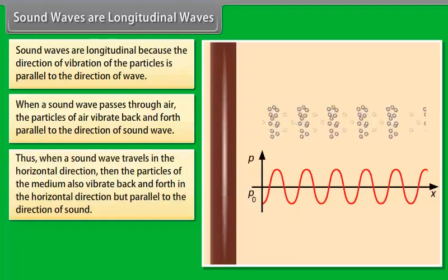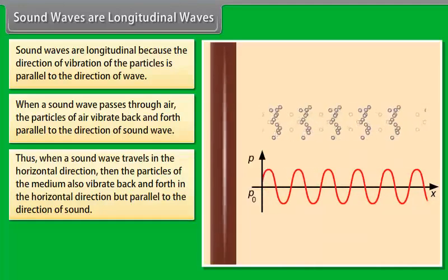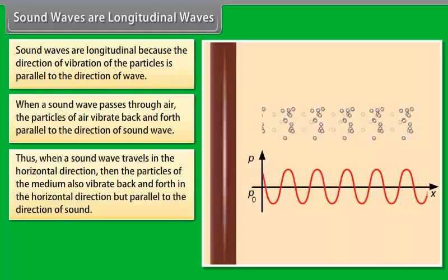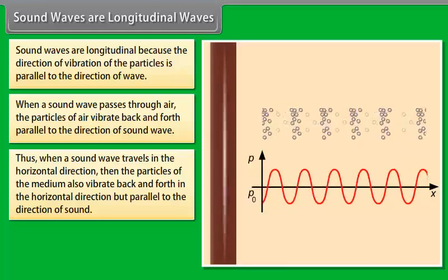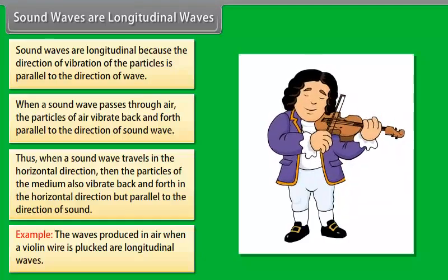Thus, when a sound wave travels in the horizontal direction, then the particles of the medium also vibrate back and forth in the horizontal direction but parallel to the direction of sound. For example, the waves produced in air when a violin wire is plucked are longitudinal waves.